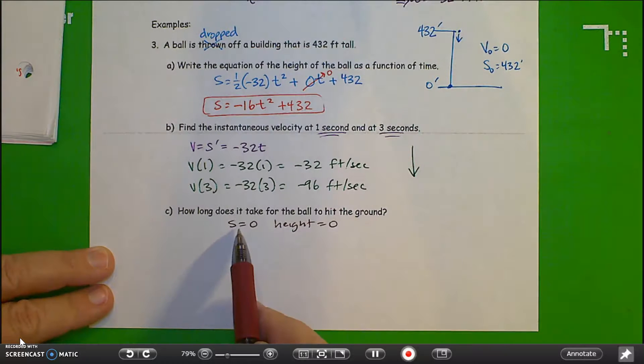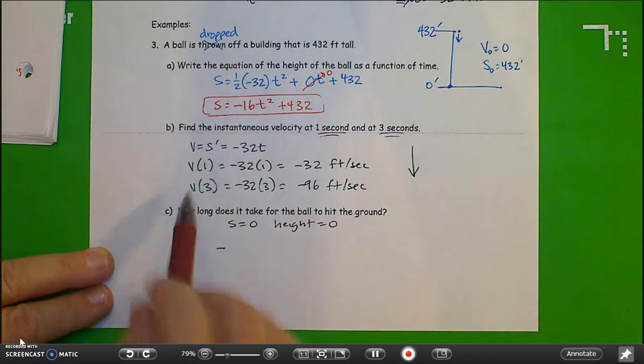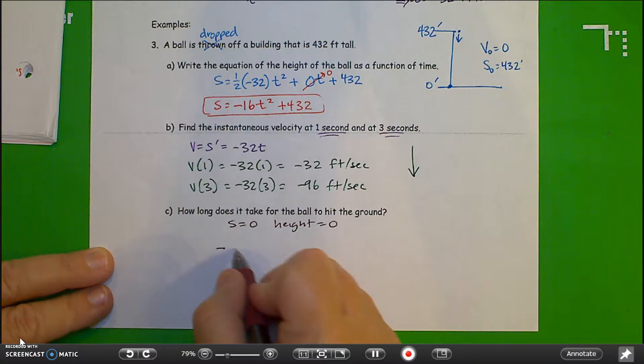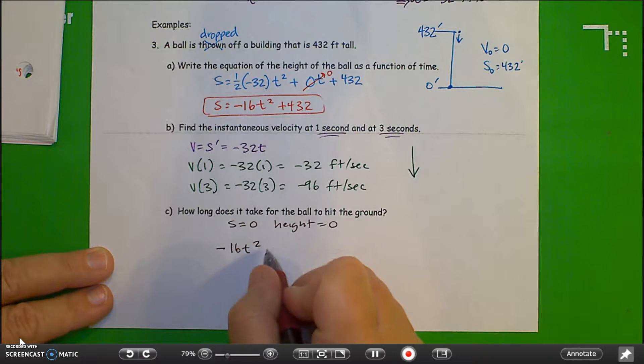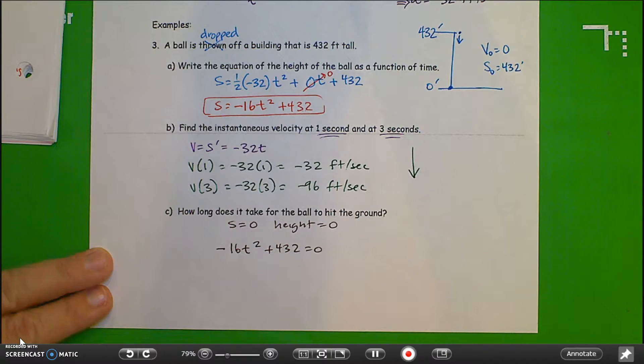So I can take my position function and set it equal to zero. So I have minus 16t squared plus 432, that's from part A, equals zero when it hits the ground.